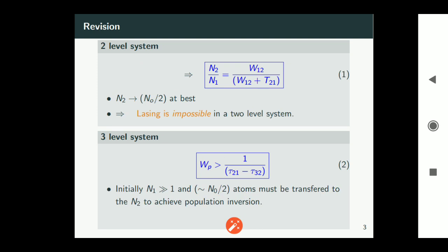So initially n1 will be very very high and at best we can send n0 by 2 atoms to the upper lasing level to achieve population inversion. This requires lot of pumping power and therefore the three level lasing system is not an energy efficient lasing system. So keep these two information in your mind.